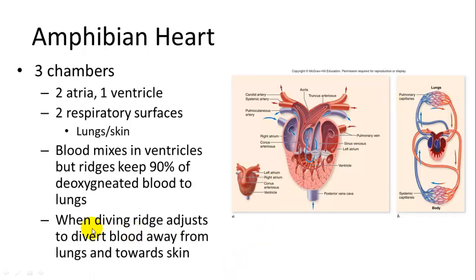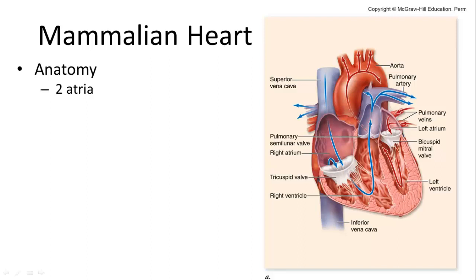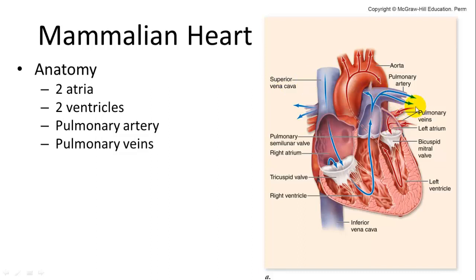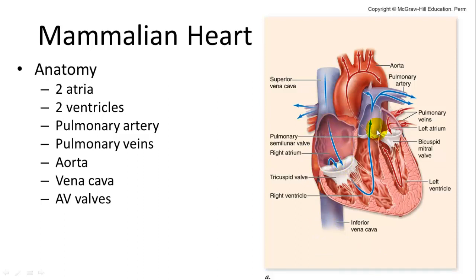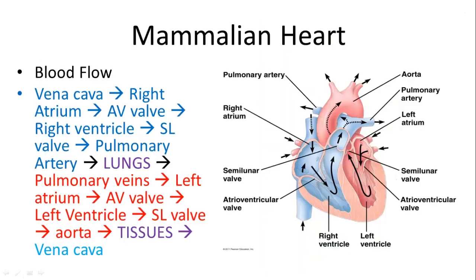Amphibians also have a mechanism to divert blood away from the lungs when diving. The mammalian heart has two atria and two ventricles. The pulmonary artery goes towards the lungs and the pulmonary vein returns oxygenated blood from the lungs. The aorta accepts oxygenated blood from the left ventricle and passes it to the tissues. All deoxygenated blood gathers back to the vena cava and then into the atrium. Valves prevent mixing of blood: AV valves are between the atria and ventricles, and semilunar valves are on the aorta and pulmonary trunk.